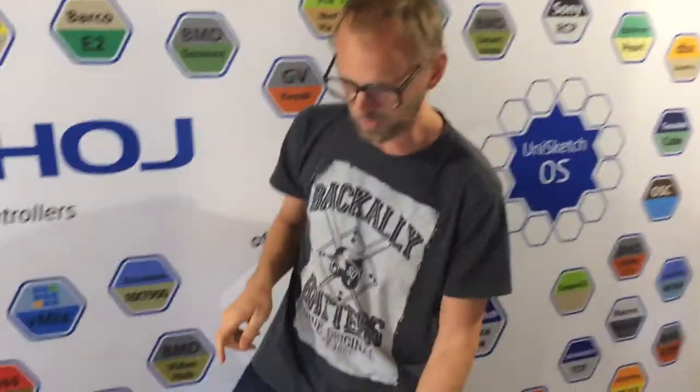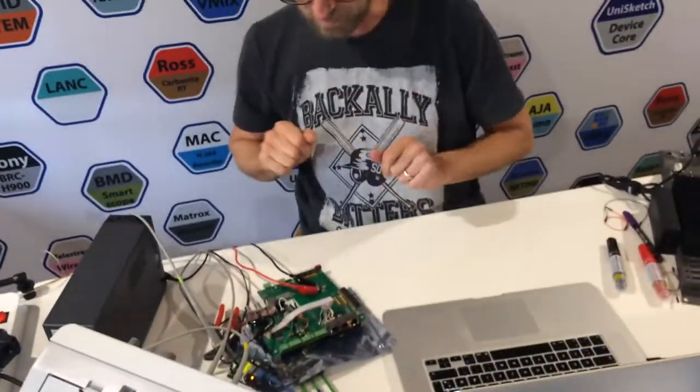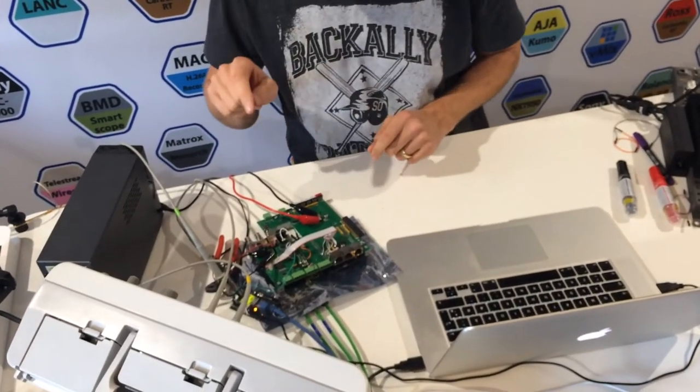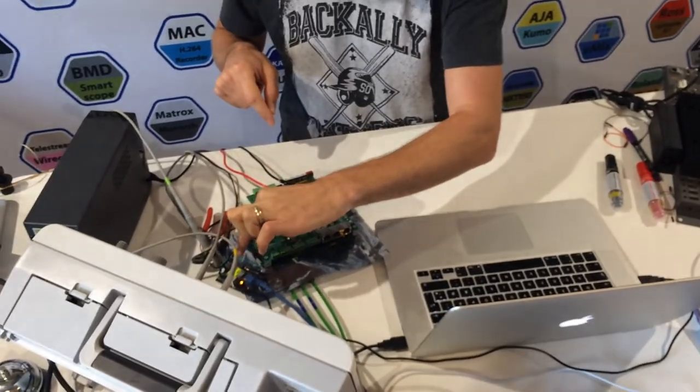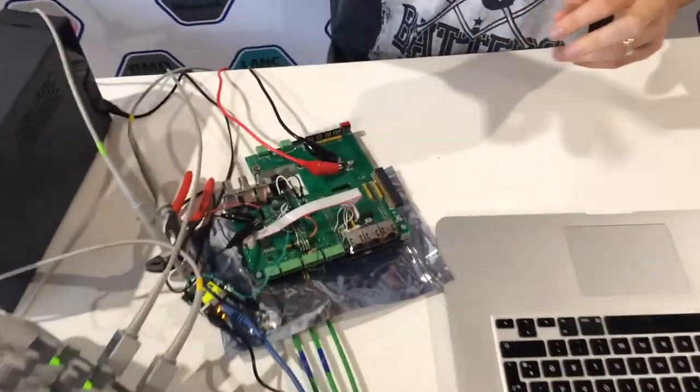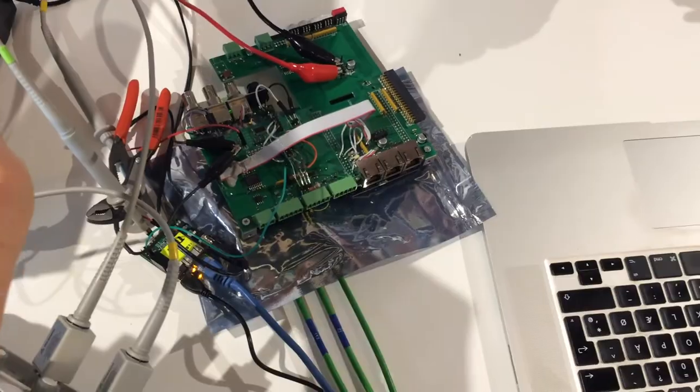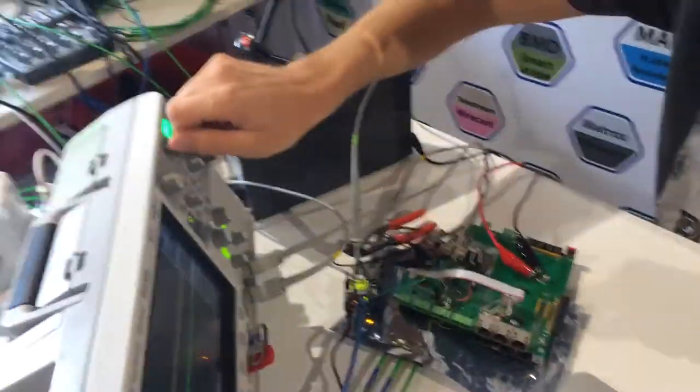Here on the table I have done some work on that. We have a sync generator which inputs to the SKAARHOJ sitting here a vertical sync for each time, and you can see it here in the oscilloscope actually. You can see this pulse.